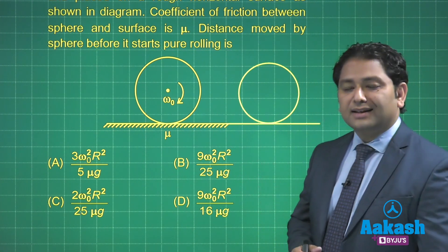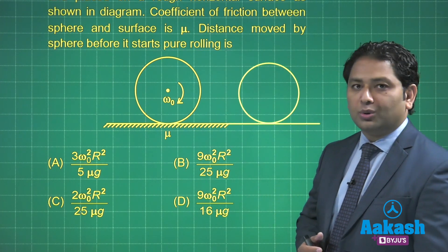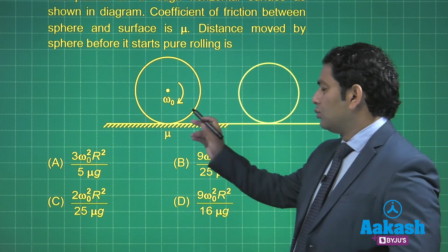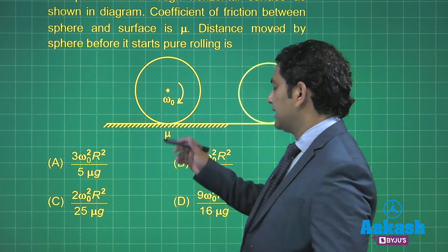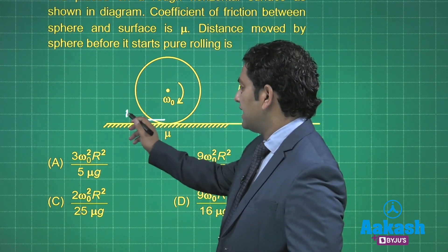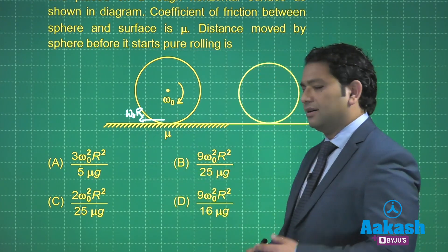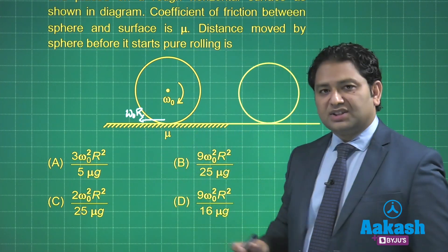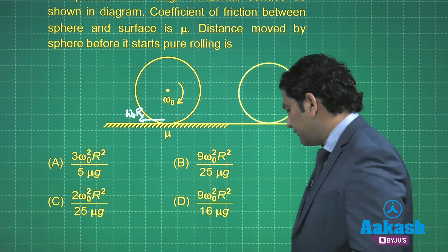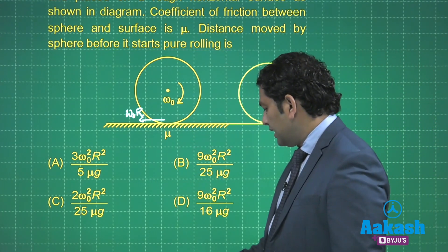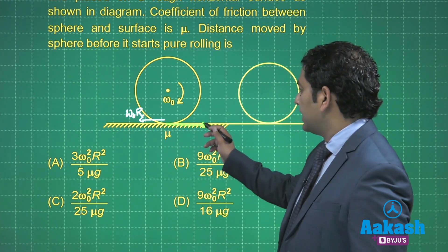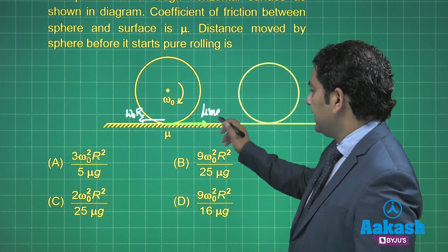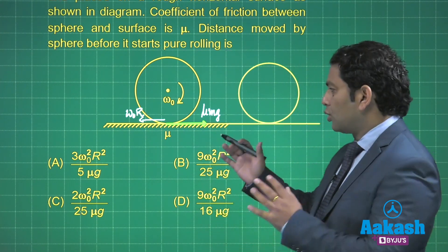First of all, let's try to understand why does that happen. Why will this sphere start pure rolling. Everything has to do with the friction and its role. Do you realize what is the velocity of the point of contact? The velocity is omega multiplied by R because it only has the rotational component. The point of contact has a backward velocity. So the friction has to be kinetic, and the direction will be in the forward direction.